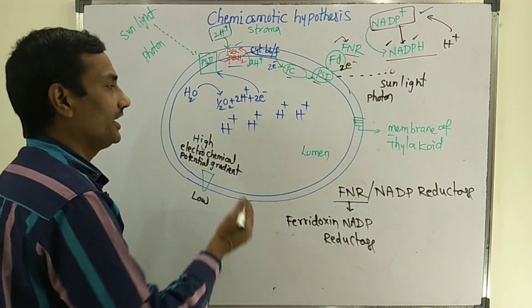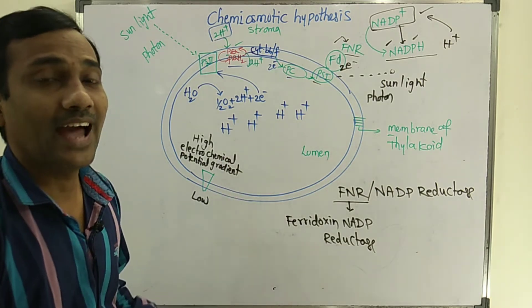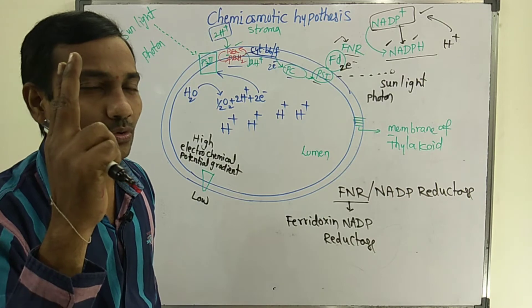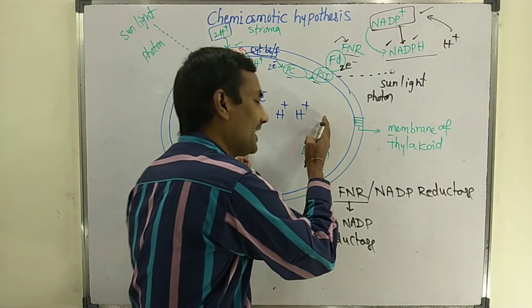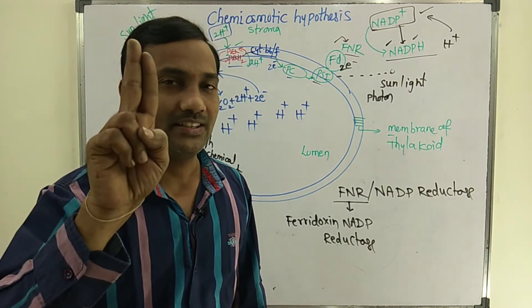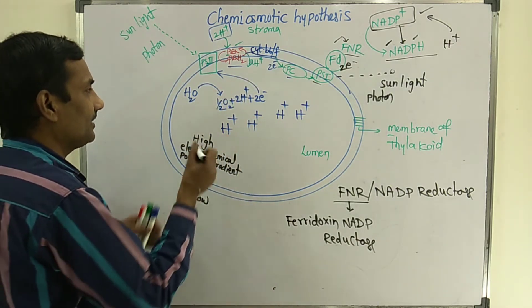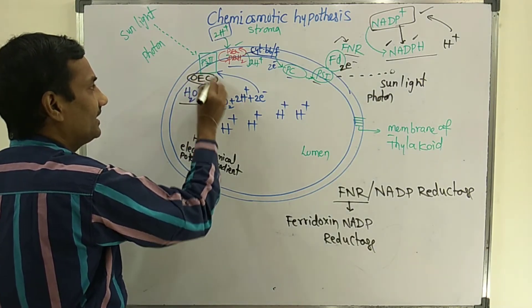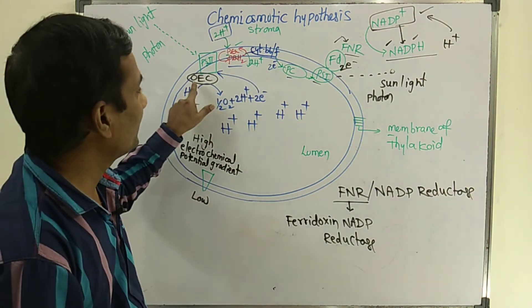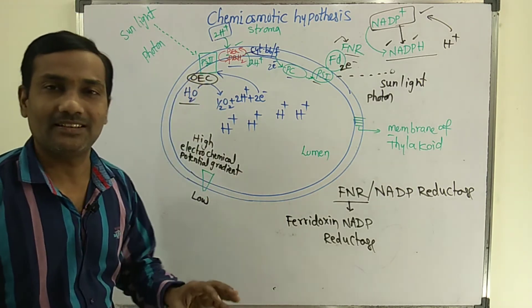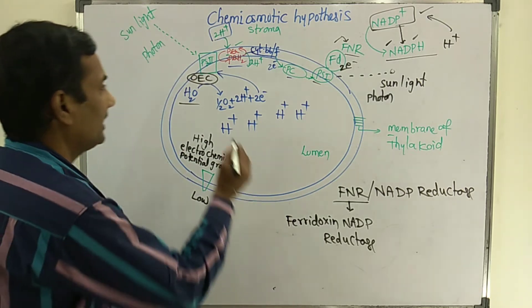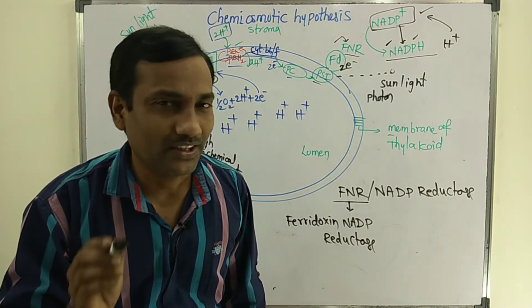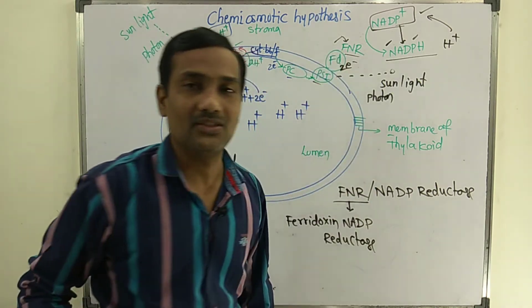One more important point: whenever protons accumulate, gradually what happens is the pH value decreases. There are two reasons for how protons accumulate in the lumen. The first main reason is because of splitting of water — water will split near PS2. This is because the OEC center — the Oxygen Evolving Complex — is located towards the lumen side near PS2. Photolysis of water, or the water splitting process, never occurs near PS1, due to the lack of OEC center near PS1.